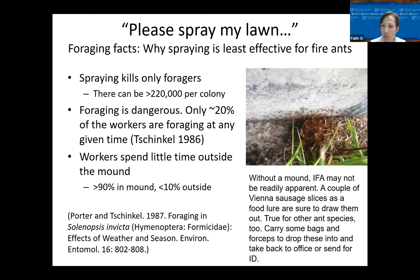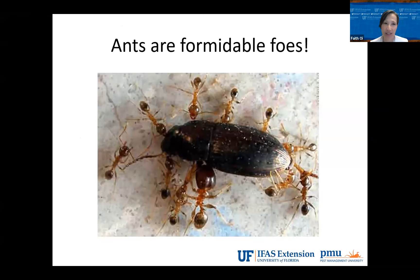The research backing this was done in Florida — Dr. Porter ended up at the USDA in Gainesville, and Dr. Schinkel was at FSU. One way to figure out ant activity is to put out slices of Vienna sausage, and you'll see ants you never thought were going to show up come to it. Vienna sausage is really an excellent monitoring tool. Ants are formidable — it just takes a few ants to haul off a large beetle.